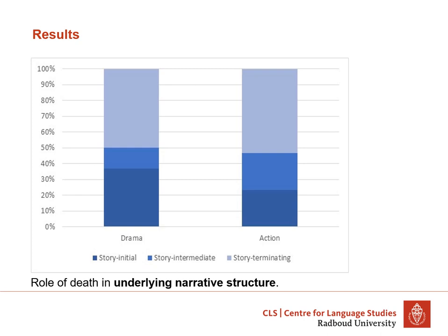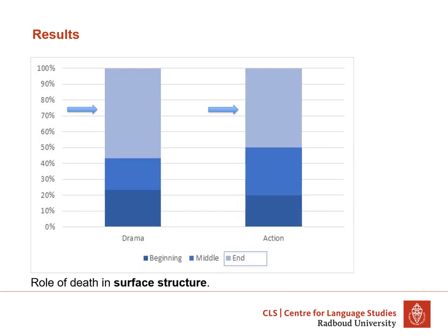This figure shows the role of death in the underlying chronological narrative structure of movies. Death-related events tend to function mostly as a story's ending, rather than a story's beginning or middle, and there was no difference between drama movies and action movies. We also analyzed the role of death in the surface structure of movies, and for the surface structure we found a similar pattern — death-related events tend to be shown at the end of a movie rather than the beginning or middle, and again there was no difference between drama movies and action movies.